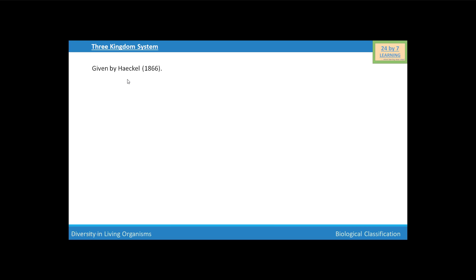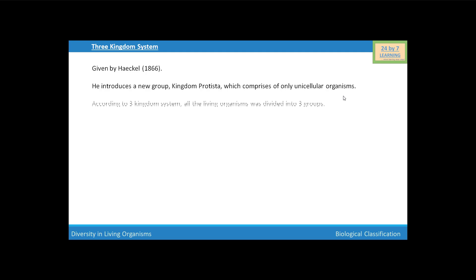Three kingdom system was given by Haeckel in 1866. According to this system, all the living organisms are grouped into three kingdoms. Haeckel introduced a new group named Protista, also called kingdom Protista, which comprises only unicellular organisms. The three kingdoms are: kingdom Protista, kingdom Plantae, and kingdom Animalia.